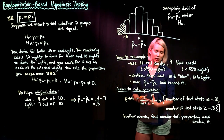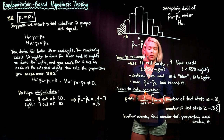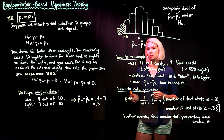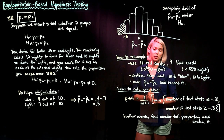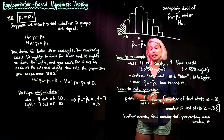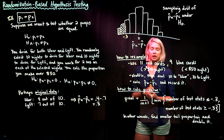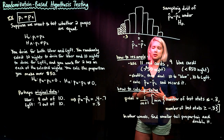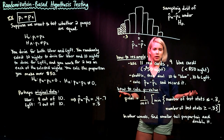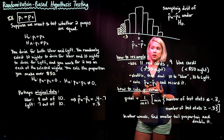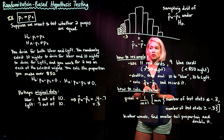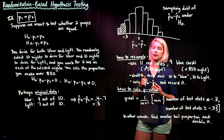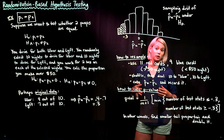Say we want to test whether two proportions are equal. Our null hypothesis is P1 equals P2, and the alternative hypothesis is P1 is not equal to P2. For example, imagine that you drive for both Uber and Lyft, and you are interested in the number of nights that you make more than $50.